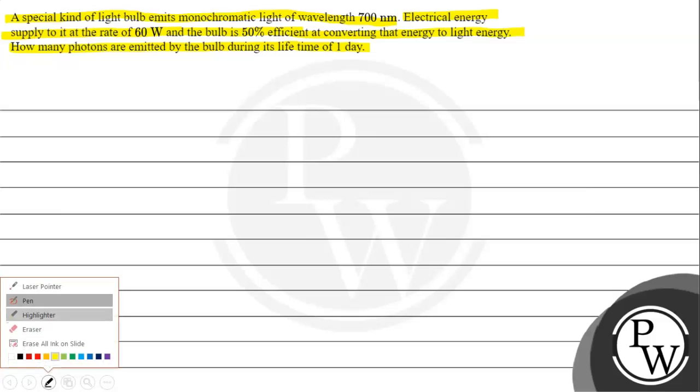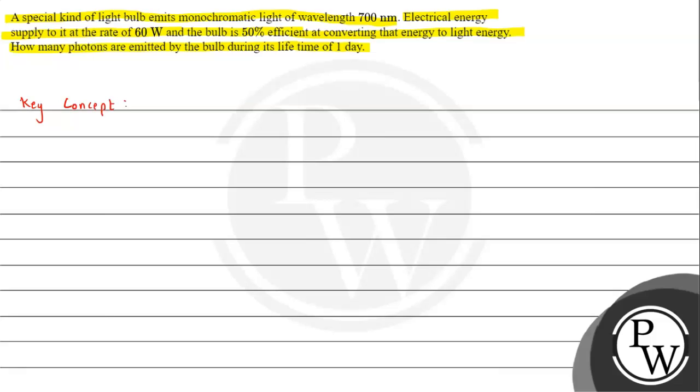To understand the question we need to understand the key concept of energy associated with photons. Let's suppose we have a source of light which emits light in the form of photons. As per Newton's corpuscular theory, light has a particle nature and each particle is an energy packet which is known as photons.